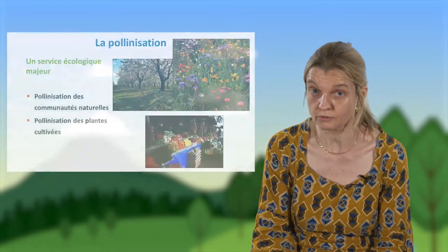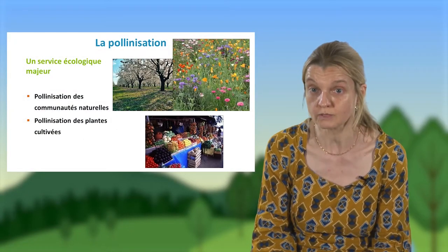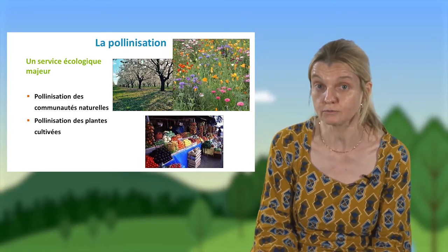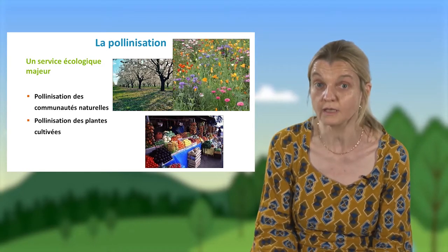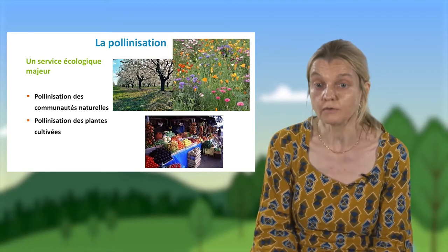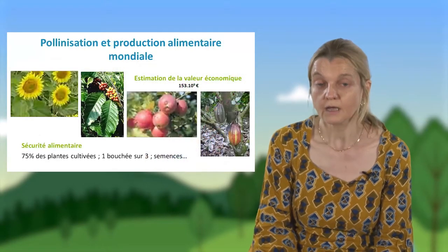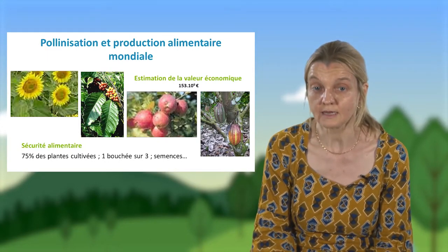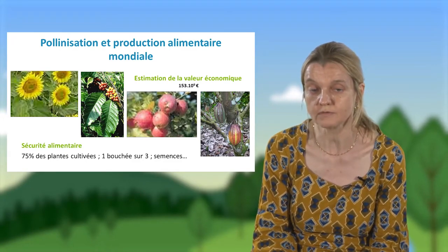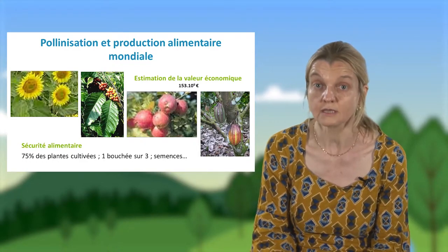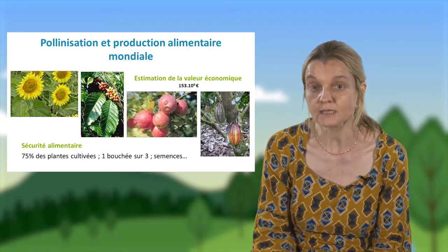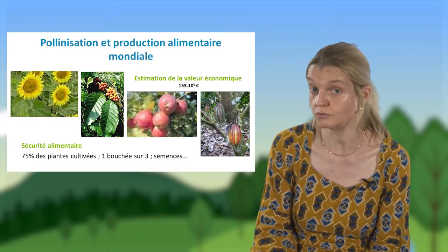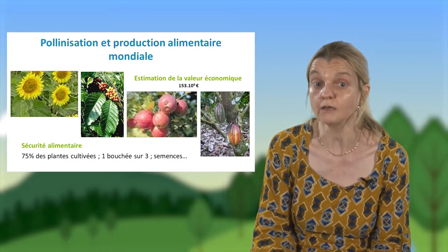Les animaux vont chercher des ressources alimentaires et les plantes vont assurer leur reproduction grâce à la visite de l'animal pollinisateur. Cette pollinisation est très importante dans le fonctionnement des écosystèmes, puisqu'elle assure la reproduction des plantes et le maintien de la biodiversité dans les communautés végétales naturelles. Elle a aussi une grande importance dans notre vie quotidienne, puisqu'elle assure la pollinisation des plantes cultivées et donc la production de nourriture. Plus des trois quarts des plantes cultivées nécessitent une pollinisation, notamment des oléagineux comme le colza ou le tournesol, ou des cultures à commerce mondial comme le café ou le cacao.